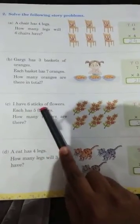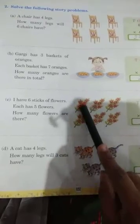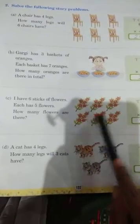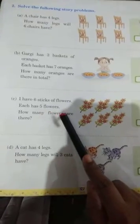I have six sticks of flowers. Kitna six of flowers hai? One, two, three, four, five, six. Six sticks of flowers hai. Or, each has five flowers.